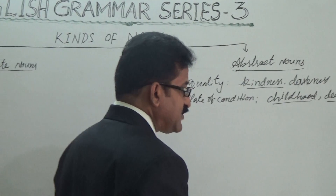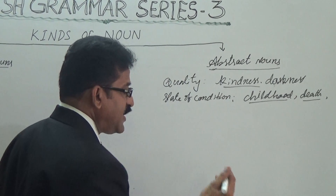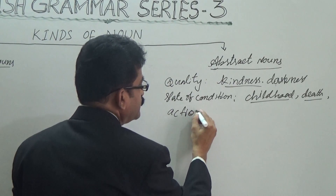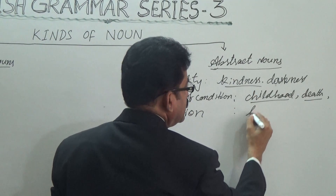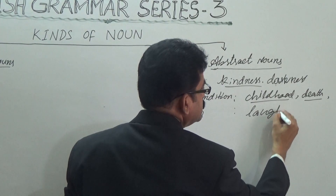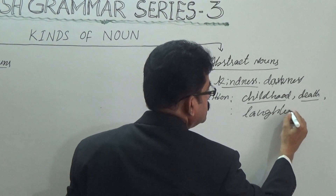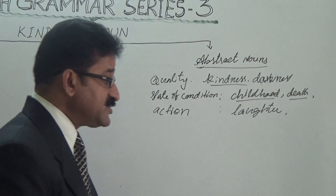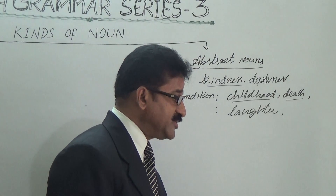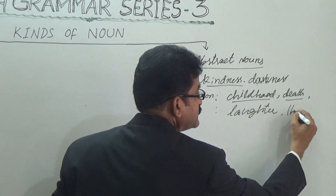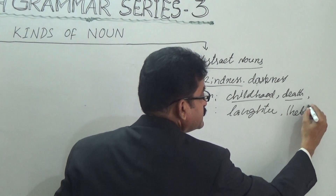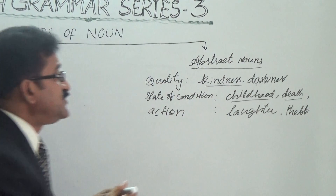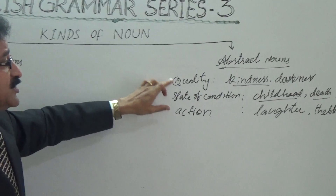At the same time, we have action. For example, laughter — we can't see it, we can do it. For example, theft. These are the three sorts: quality, state of condition, and action.